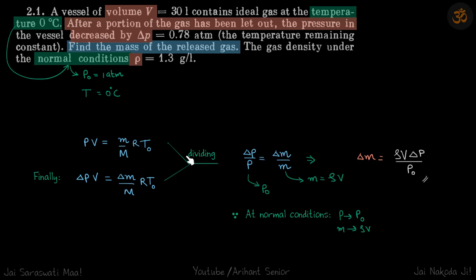We'll divide these two and get this result. Here we know the value of delta P. We will take P as one atmosphere. M equals rho times V, and both rho and V are given.